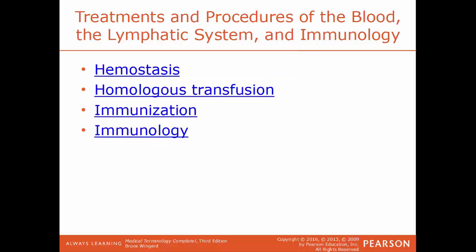Hemostasis is the process of stopping bleeding — hemo refers to blood, stasis means stopping. It's the natural process of the body reacting to injury and stopping bleeding through a blood clot. Homologous transfusion is receiving blood from someone else of the same species but a different individual. Immunization means being vaccinated for diseases. Immunology is the study of the immune system.